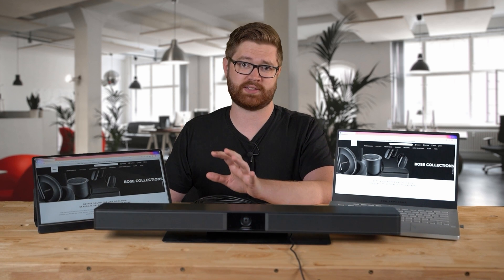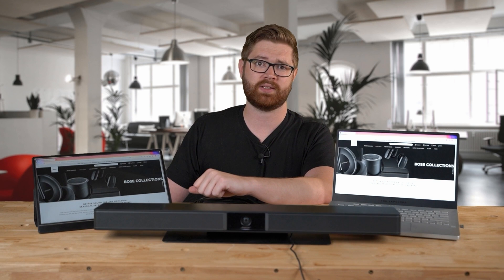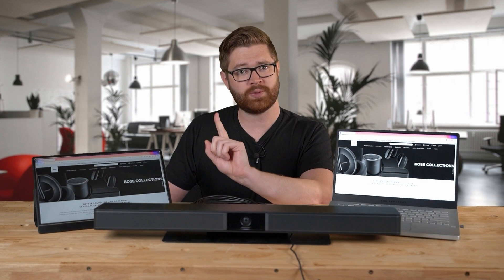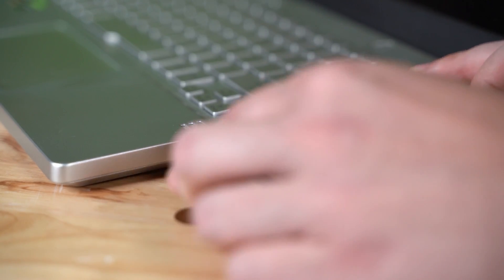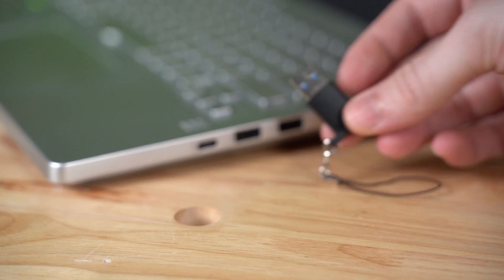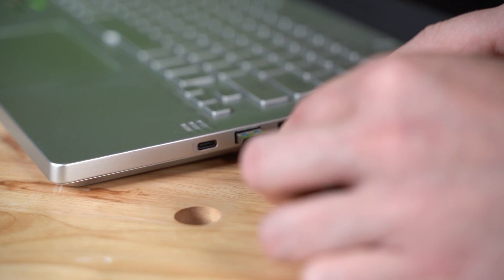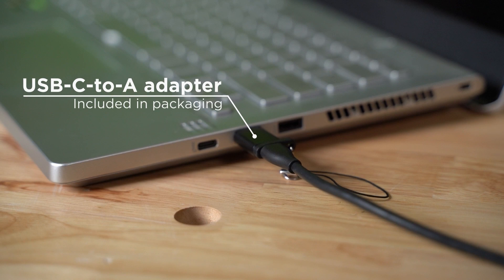After checking that all devices are powered on and you still aren't seeing your content on the in-room display, start checking your cable connections. There should be one USB-C cable connected to your computer and the VB1. Make sure that the USB-C cable is firmly connected to both. If your computer does not have a USB-C port, make sure that the USB-A adapter is firmly connected.